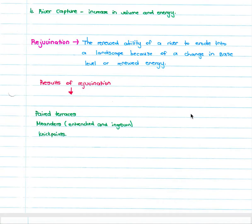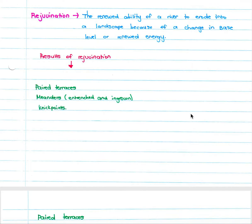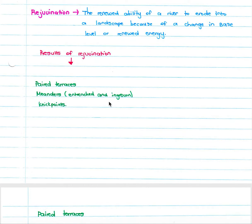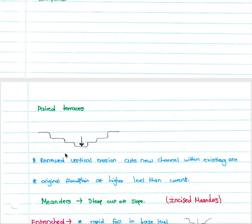There are three things that will come from rejuvenation: paired terraces, as we will discuss below, meanders, which can be entrenched and ingrown, and neck points. Our paired terraces: when you have renewed vertical erosion, it cuts a new channel within an existing one. As you can see, every time the river is rejuvenated, it cuts down, bringing a new channel within an old channel, leading to our paired terraces. The original floodplain is at a higher level than the current floodplain.